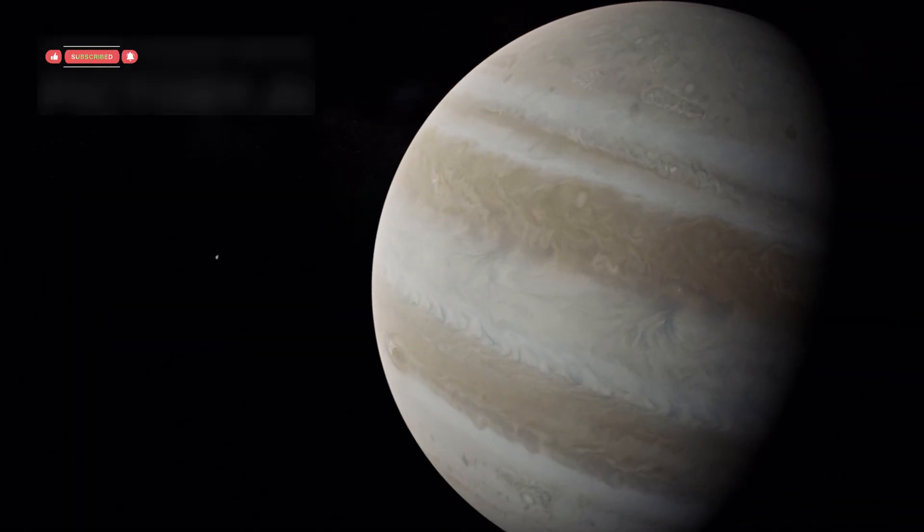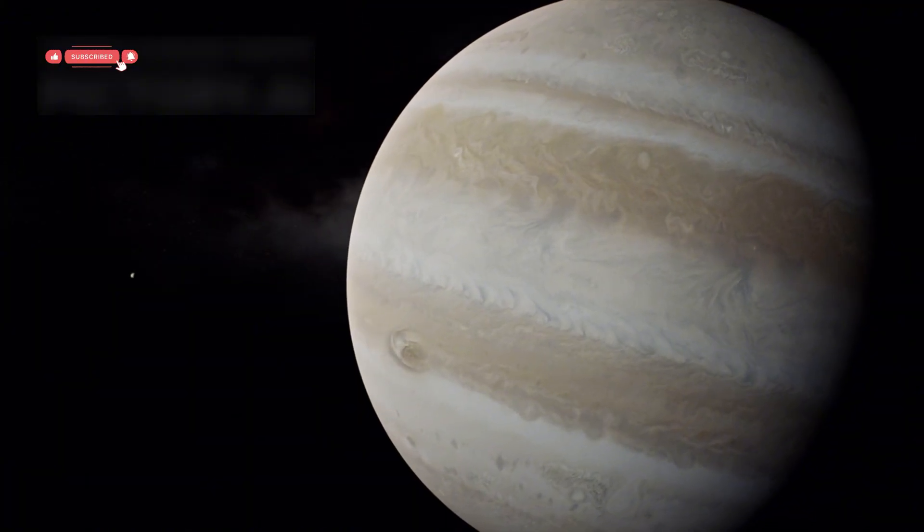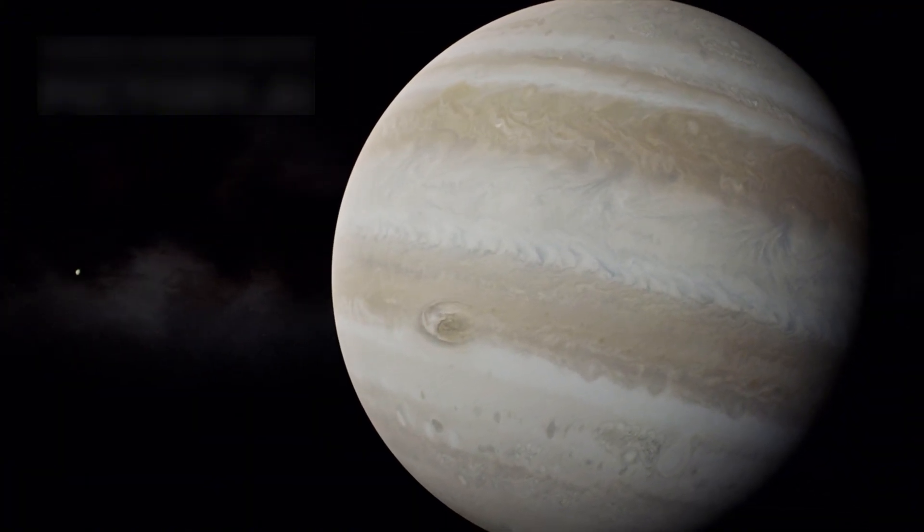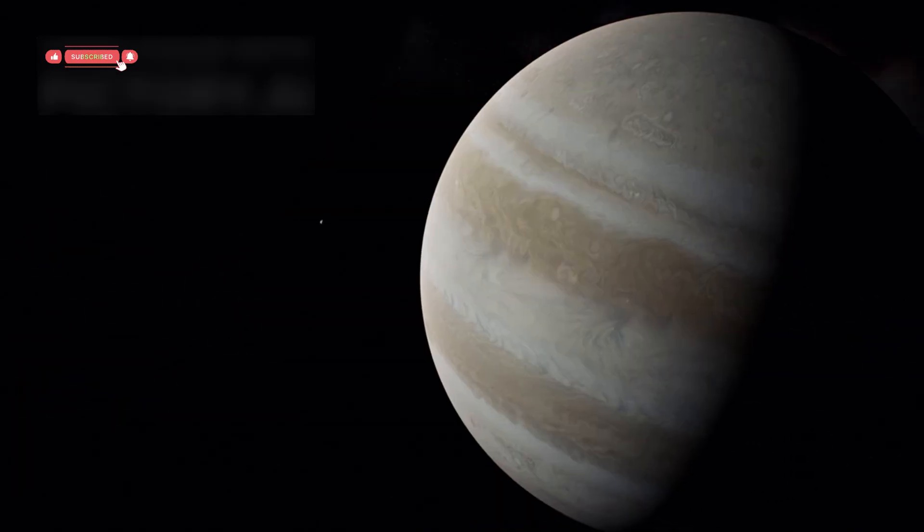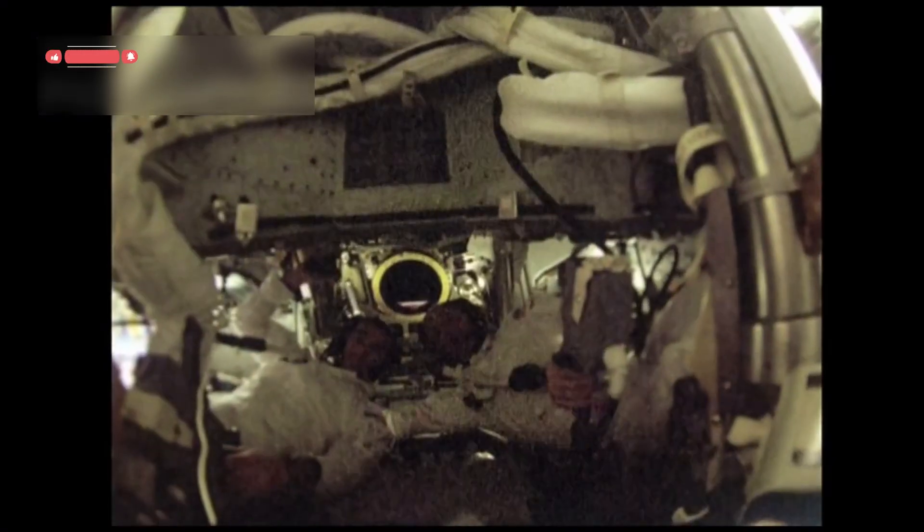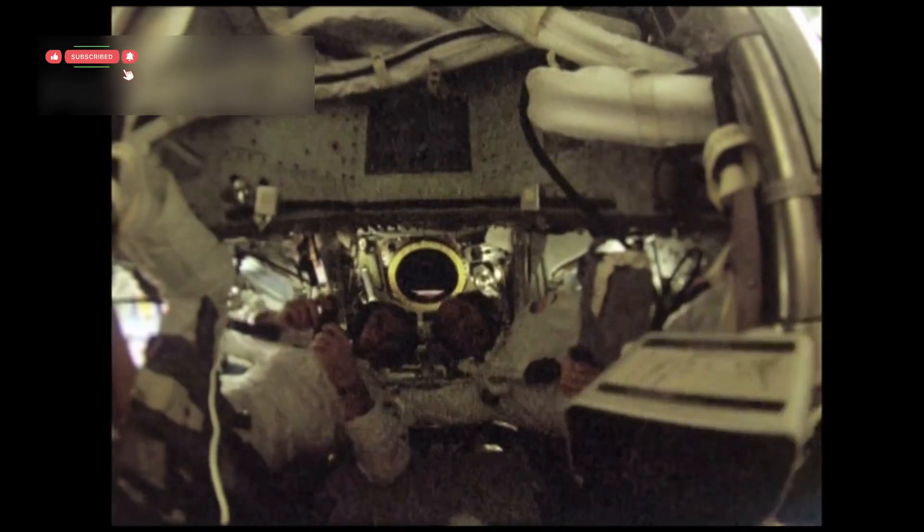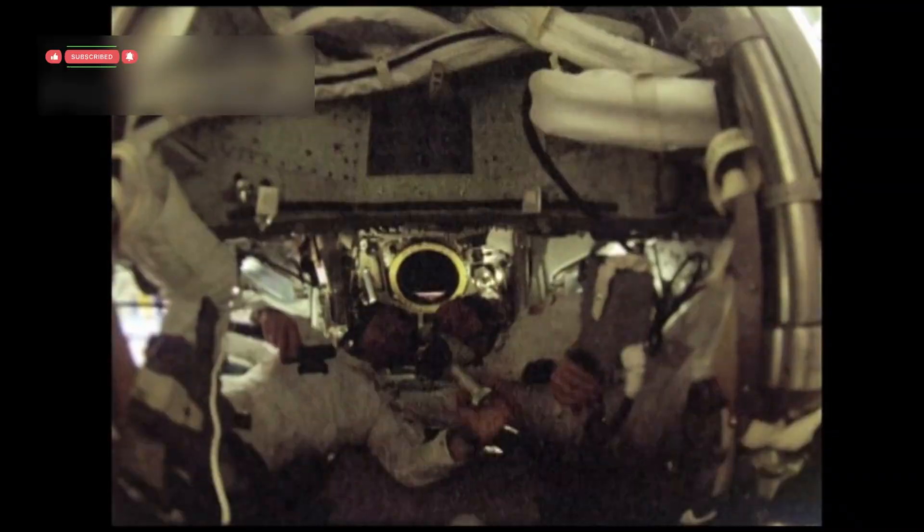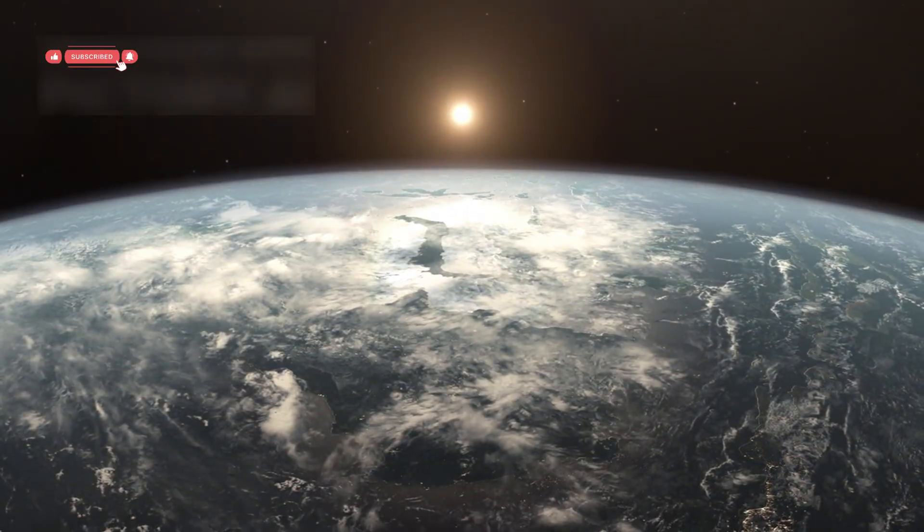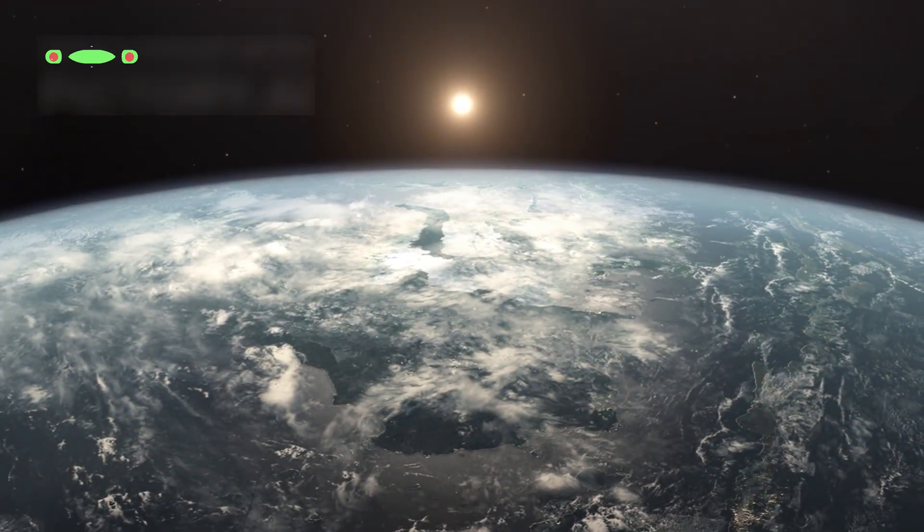Voyager 1 took a fast track to reach Jupiter and Saturn first, while Voyager 2 had a longer route that would carry it past those worlds to even more distant planets. Both probes used each planet's gravity to slingshot themselves farther out into space.